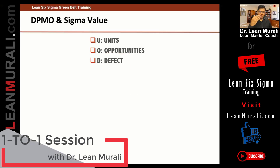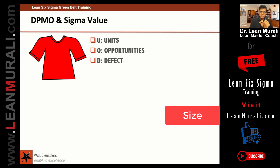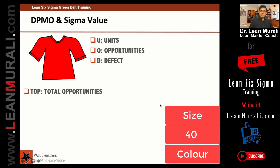A defect is when a product is not meeting a specification. For example, you ordered a shirt on Amazon. You look for size and color — those are the two major things, and those two are opportunities for defects. Maybe the color is not what you saw on screen, or the size 40 is not fitting you properly. That is called a defect.